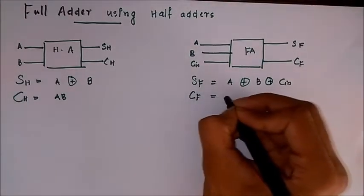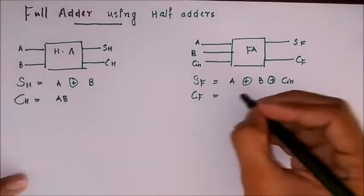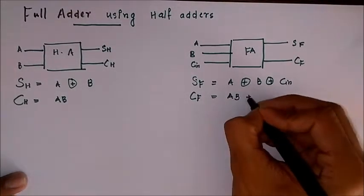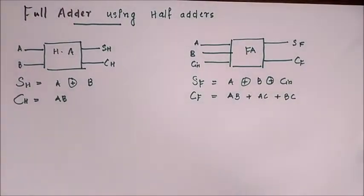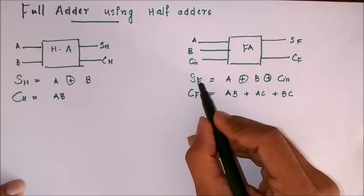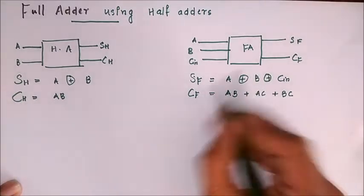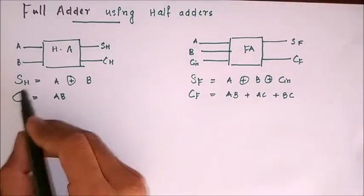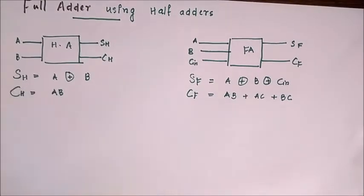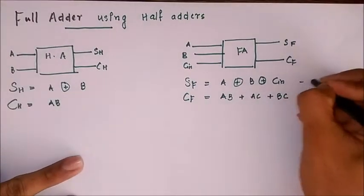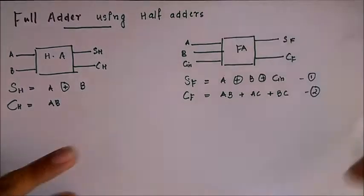And carry as AB plus AC plus BC. So what you have to do is we have to express this SF and CF, that is sum and carry of the full adder, in terms of SH and CH, sum and carry of the half adder.